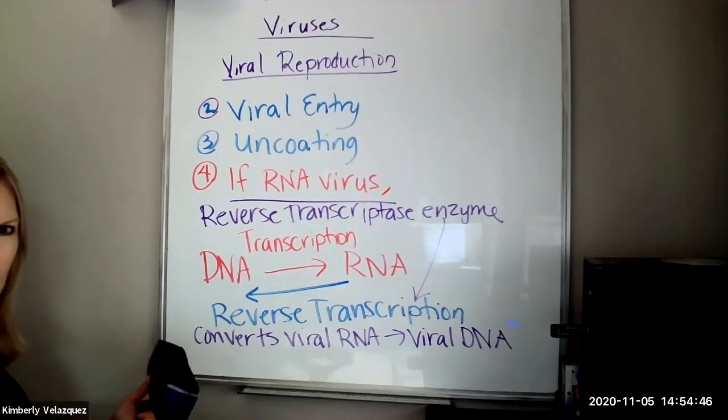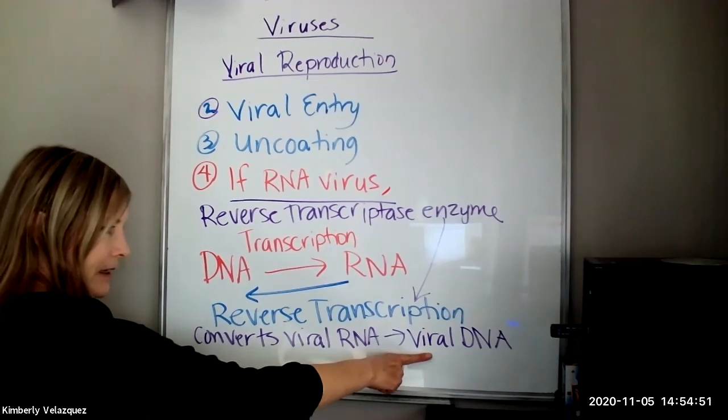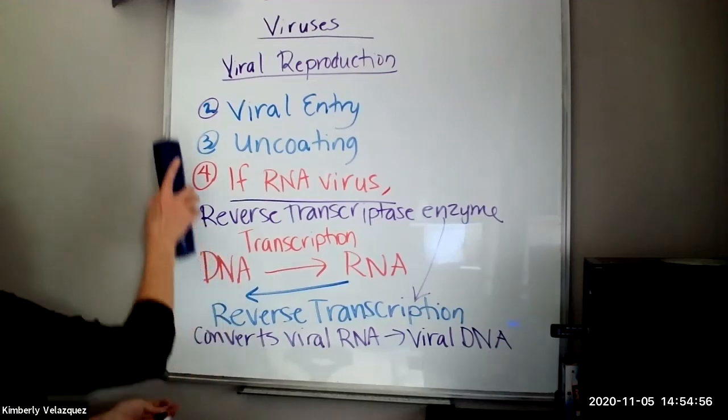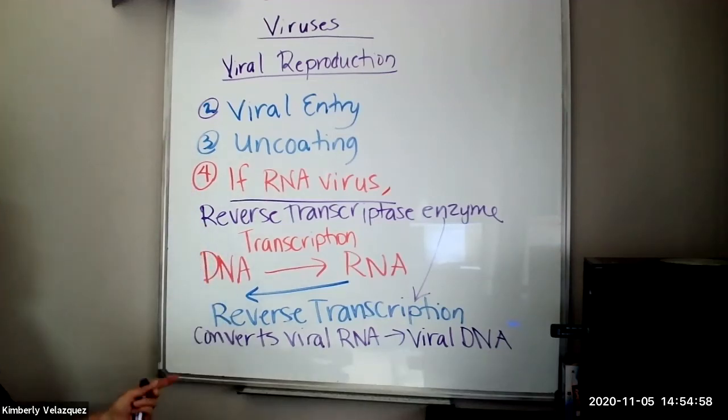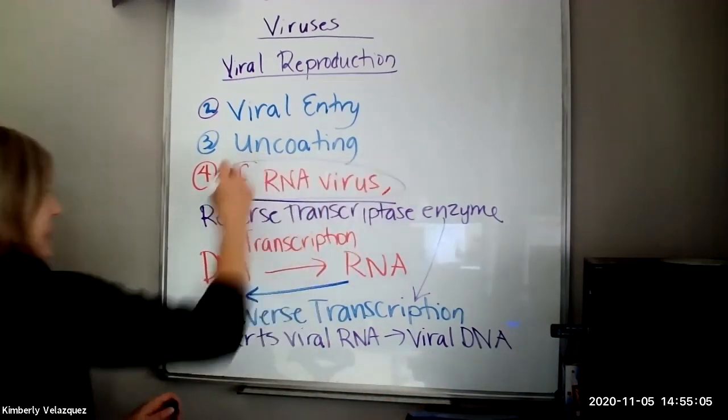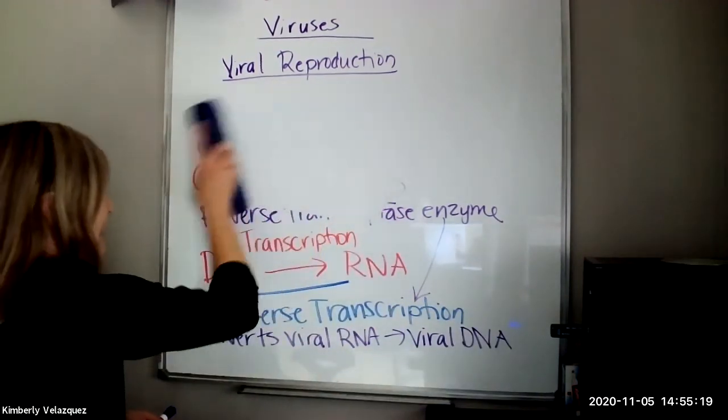The next step is the virus needs to get its DNA into the host cell DNA to start using it as a reproductive factory. So step five here, if it's a DNA virus, it will go directly to this step. So this step four is only if it's an RNA virus. Otherwise, it'll go directly to step five. By the way, the way I'm numbering these steps is just to help us keep track of it. If you look at a textbook, it might not necessarily be numbered this way. It's just how I'm doing it today on the board.